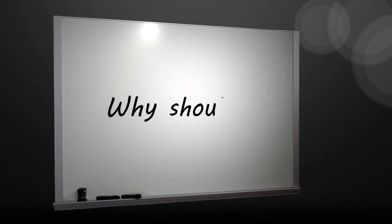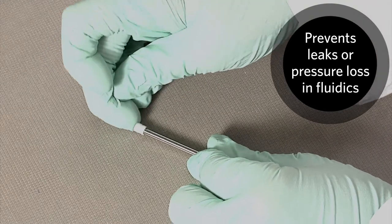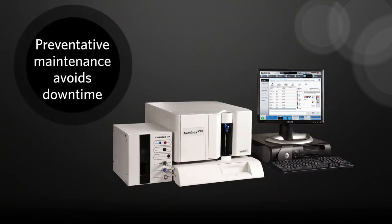Why should I replace the syringe seal? Replacing the seal will prevent leaks or pressure loss in the fluidic system. This is a preventative maintenance procedure to avoid any downtime on the Luminex 200 instrument.